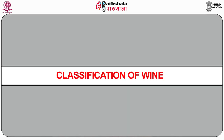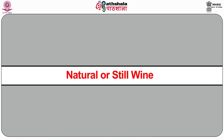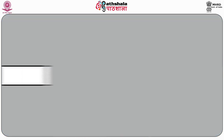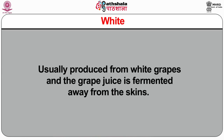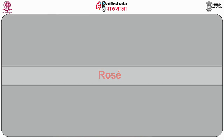Now I will discuss the classification of wine. Generally wines are classified into the following categories. Natural still wines — these are further classified into red, being fermented with the grape skin from which the wine gets its color; white, usually produced from white grapes where grape juice is fermented away from the skins; and rosé, where the color is controlled by regulating the duration the grape juice is kept in contact with the skin.